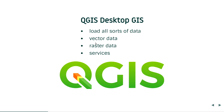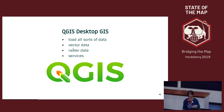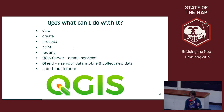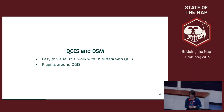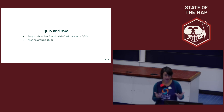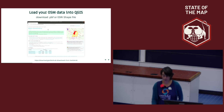QGIS is a desktop GIS where you can load all sorts of data: vector data, raster data, and services like WMS, WFS, and WMTS. You can view, create, process, print, and style data, set up routing functionality, and create services with QGIS Server. You can also go into the field and use QField to collect data. It's easy to visualize your OpenStreetMap data and work with it using the many plugins available.